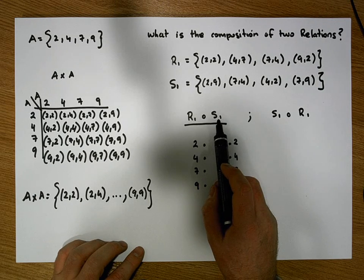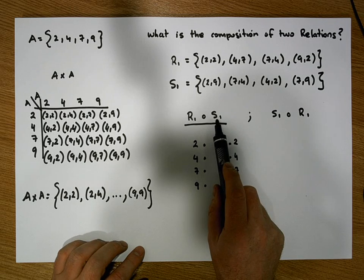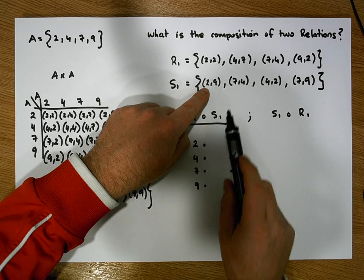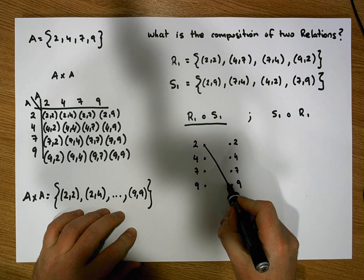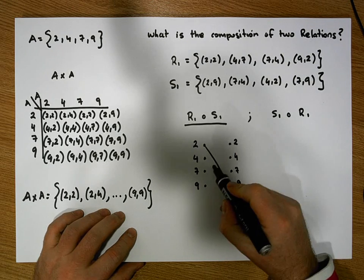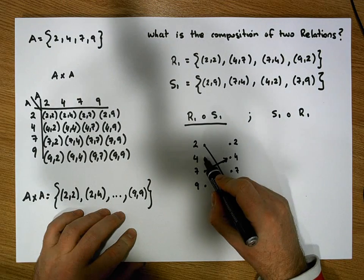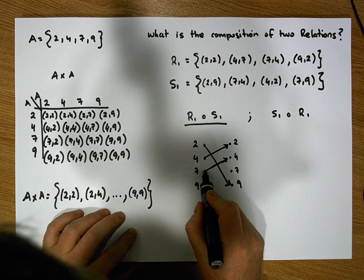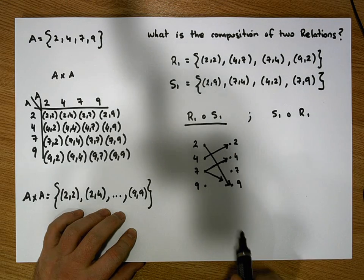Since we operate right to left, we do S1 first. We take each ordered pair, take the domain element, and put a directed edge to the range element. So 2 is mapped to 9, 7 is mapped to 4, 4 is mapped to 2, and 7 is also mapped to 9. This particular graph represents the relation S1 — the mapping from set A into set A.